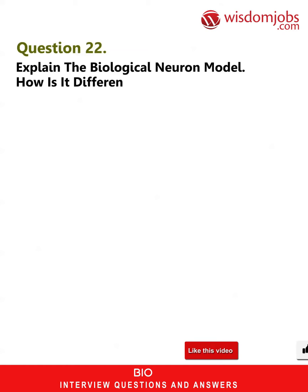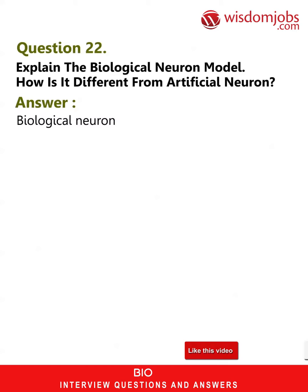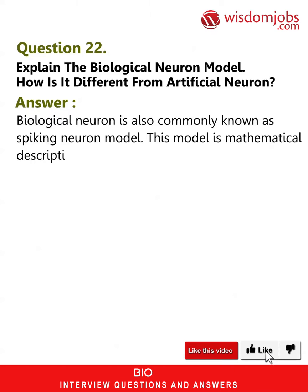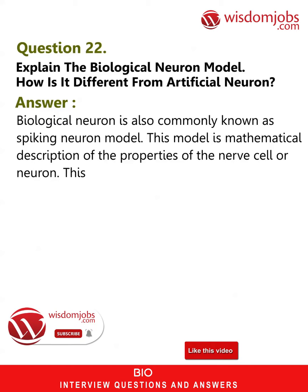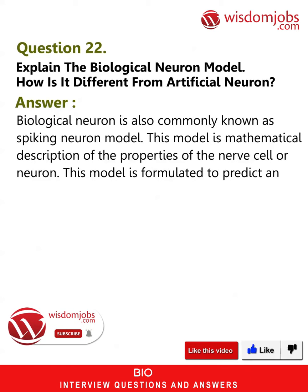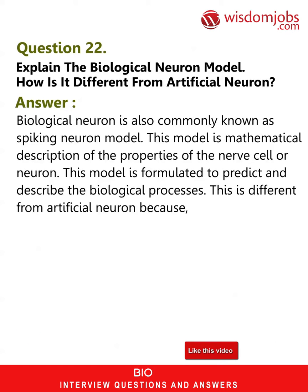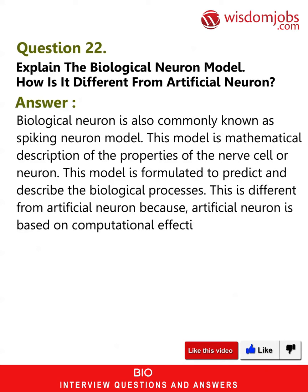Question 22: Explain the biological neuron model and how it differs from an artificial neuron. The biological neuron, also known as the spiking neuron model, is a mathematical description of the properties of a nerve cell or neuron, formulated to predict and describe biological processes. This differs from the artificial neuron, which is based on computational effectiveness and uses synaptic weight to determine neuron output.